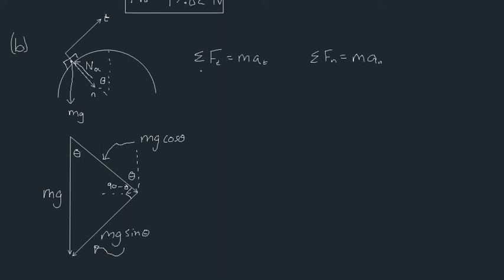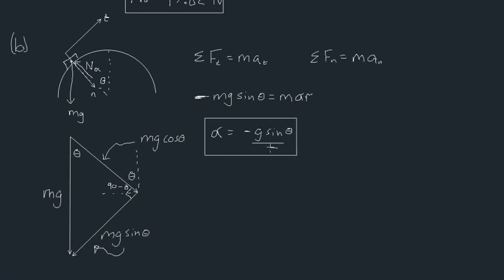The sum of forces in the tangential direction: there's only one force — the component of gravity — giving −mg·sinθ = m·aₜ = m·R·α. So α at point A equals −g·sinθ / r. That's the angular acceleration — a surprisingly less useful formula for our particular problem, but it's important to derive it fully.